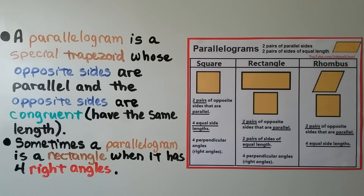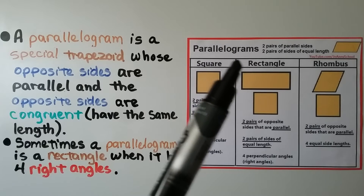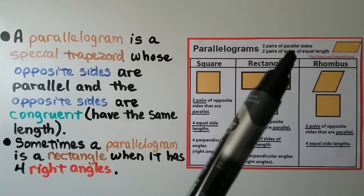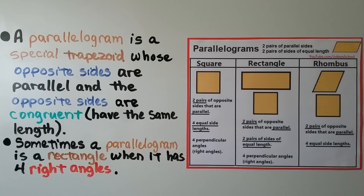A parallelogram is a special trapezoid whose opposite sides are parallel and the opposite sides are congruent — they have the same length. Sometimes a parallelogram is a rectangle when it has four right angles. A parallelogram needs to have two pairs of parallel sides and two pairs of sides of equal length.